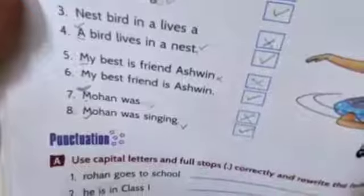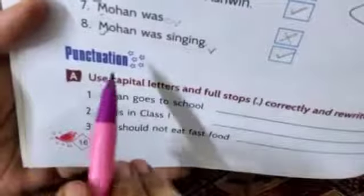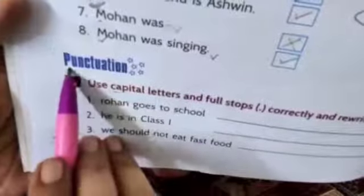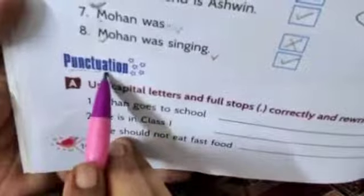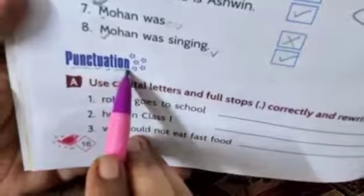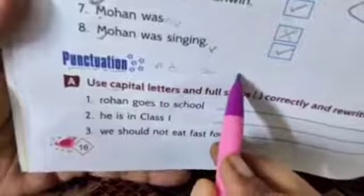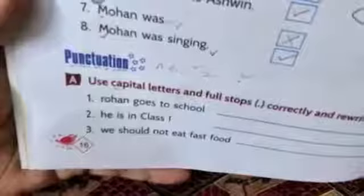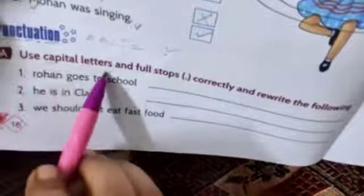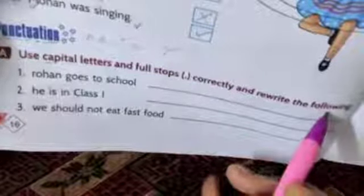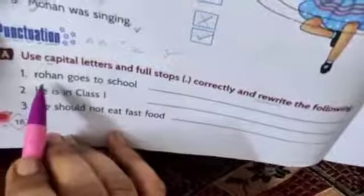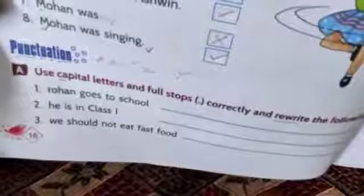Capital letters and full stops — together these are called punctuation. A capital letter at the start and a full stop at the end — combining these two is called punctuation. Now for the exercise below: use capital letters and full stops correctly and rewrite the following sentences. These sentences have mistakes — you have to find the mistakes and rewrite them correctly.